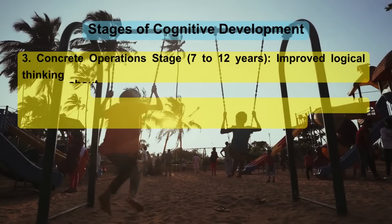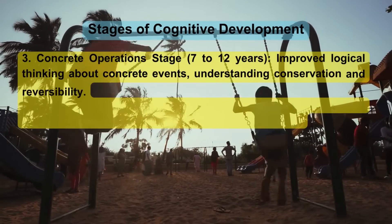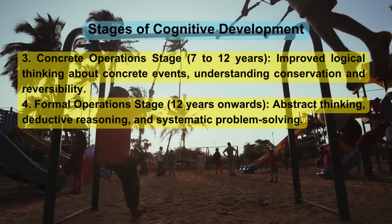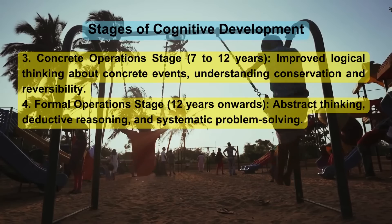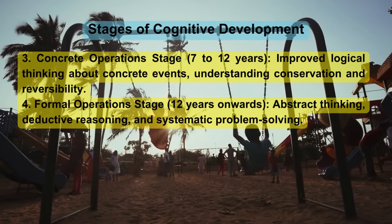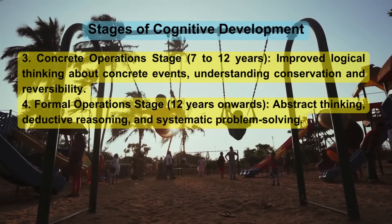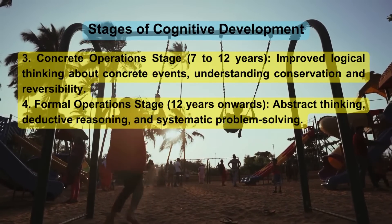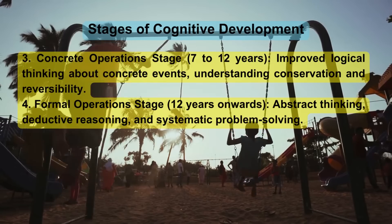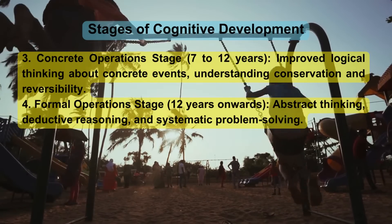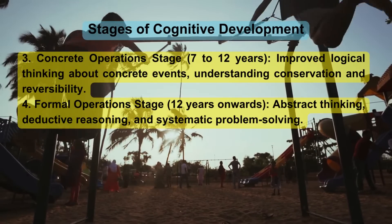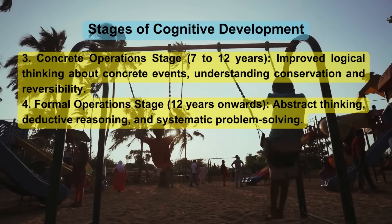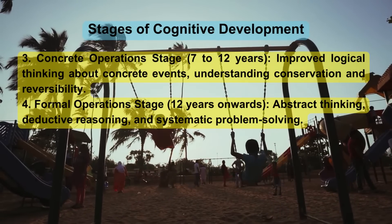Stage 3 is the Concrete Operational stage, from 7 to 12 years, characterized by improved logical thinking about concrete events, and an understanding of conservation and reversibility. Stage 4 is the Formal Operational stage, from 12 years onwards, involving abstract thinking, deductive reasoning, and systematic problem-solving.